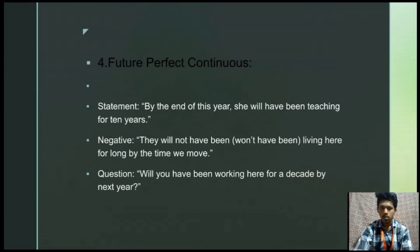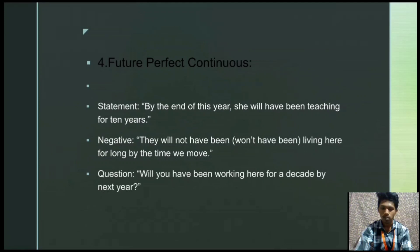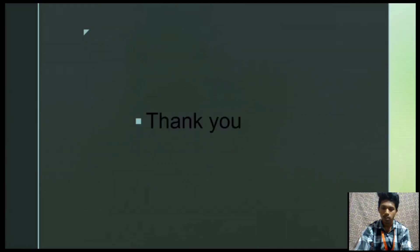The final one is future perfect continuous. The statement is: 'By the end of this year, you will have been teaching for 10 years.' The negative form is: 'They will not have been living here for long by the time we move.' The positive form is: 'We will have been working here for a decade by next year.' Thank you for giving this opportunity.